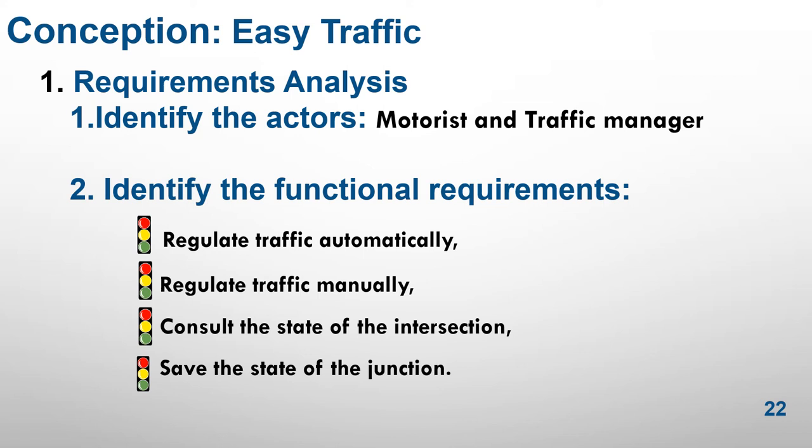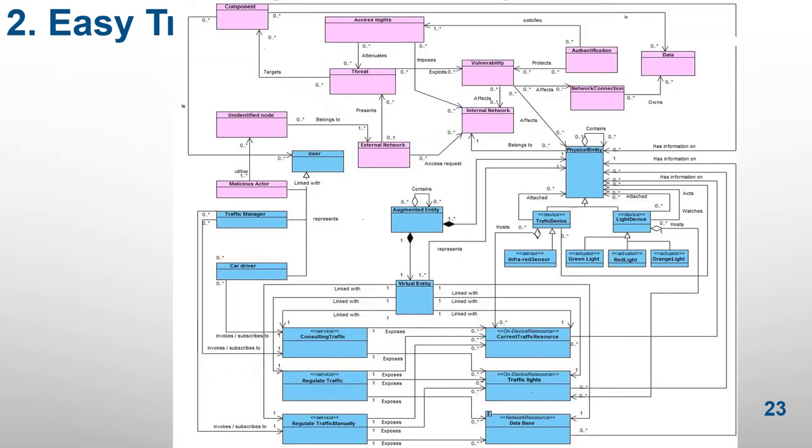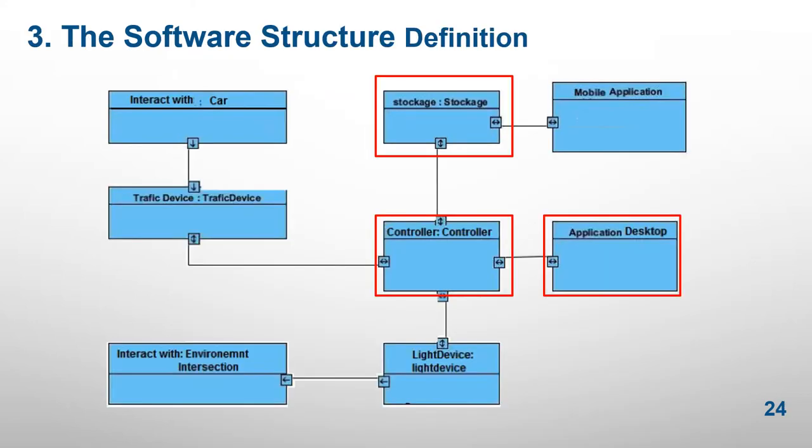First, identifying actors — for this case there are two: motorist and traffic manager. Then, identifying the functional requirements such as regulating traffic automatically and manually. The second step is defining an easy traffic model by instantiation of the extended IDEA domain model. After that, we define the relationships, interactions, and data flows between the different components of the easy traffic system.